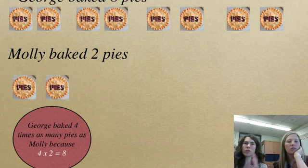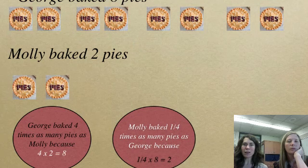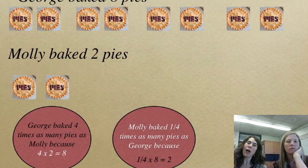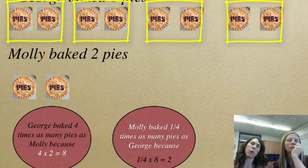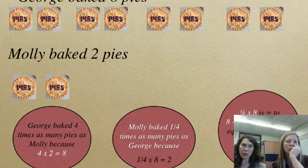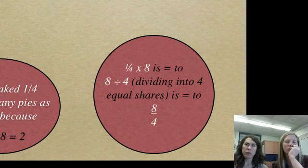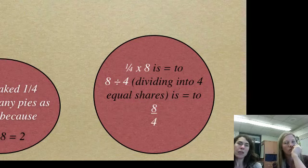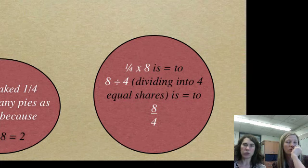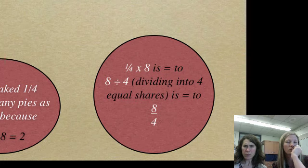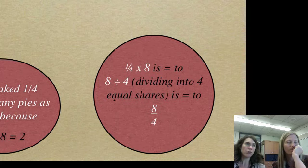Now this way is similar, but it's just sort of flipped around. Another way that you can also think about it is Molly, she only baked one-fourth times as many pies as George. Because one-fourth times eight equals two. And you can see that if we could move Molly's two pies up, they would cover a fourth of his, yeah, the one out of the four groups that we have there. Exactly.